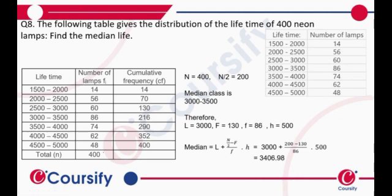The total cumulative frequency is 400, so we have n as 400, n by 2 is 200. The cumulative frequency next to 200, which is greater than 200 and nearest to it, is 216. So our capital F will be 130.